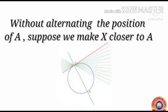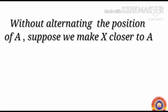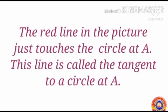Without alternating the position of A, suppose we make X closer to A. Here the red line in the picture just touches the circle at A. This line is called the tangent to a circle at A.